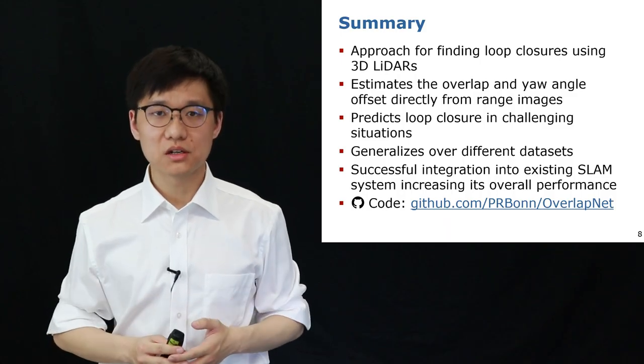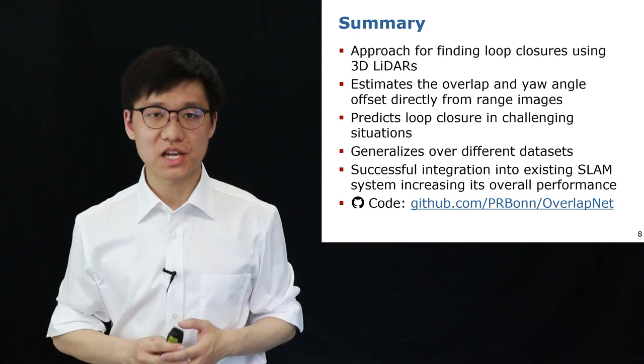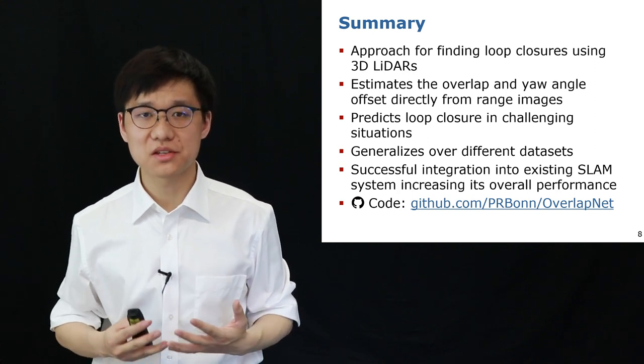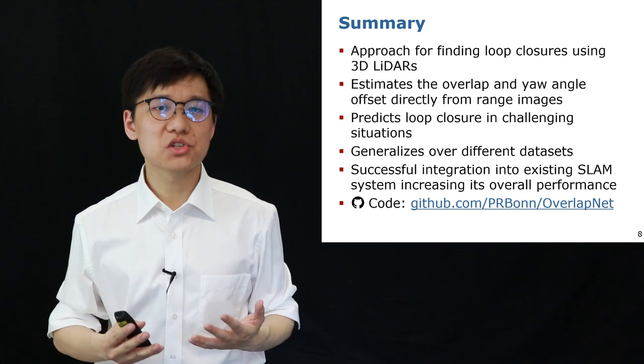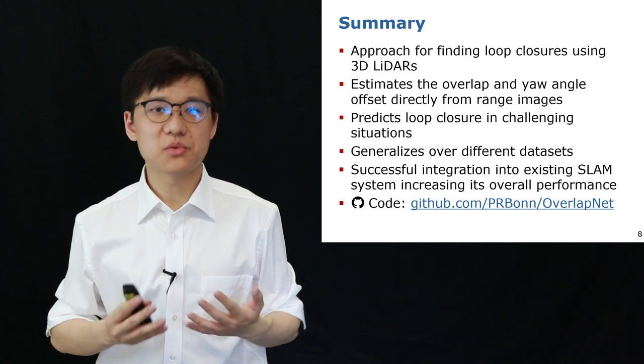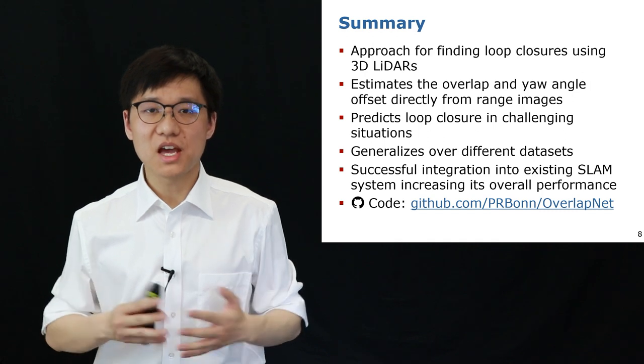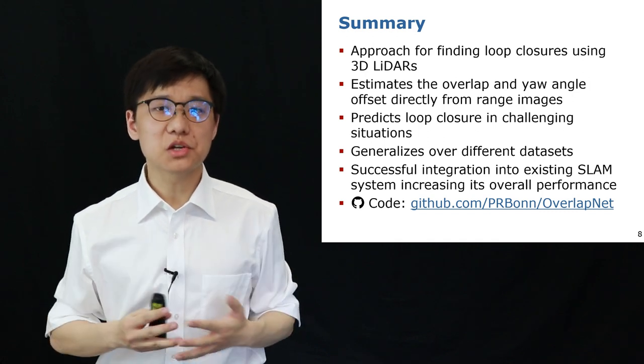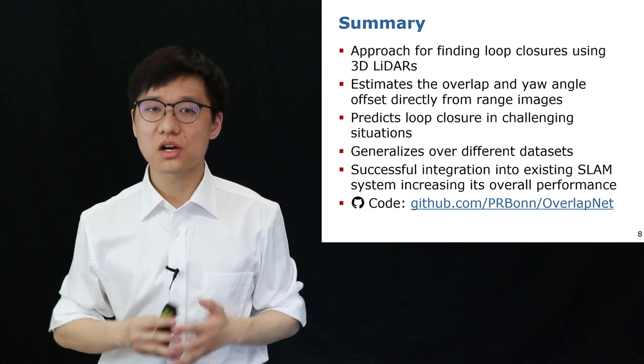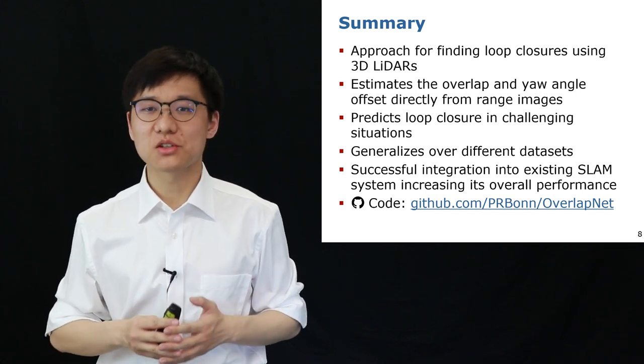To summarize this work, we propose an approach to find loop closures using 3D LiDAR scans. It estimates the overlap and relative yaw angle between pairs of scans using range images. Our approach can also find loop closure candidates in challenging situations. The experimental results showed that our approach generalized well over different datasets. In the end, we successfully integrated our approach into a SLAM system and improved its overall performance. The code of OverlapNet has already been released on our GitHub. Please feel free to give it a try.